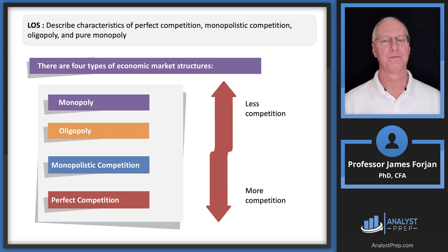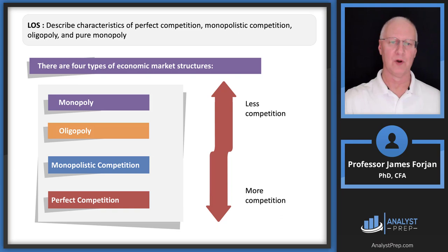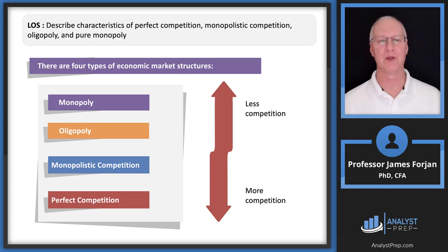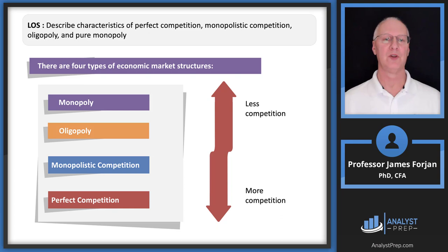In its simplest form, when you go from lots and lots of competition under perfect competition to fewer and fewer producers, you have less competition. A pure monopoly would be just one firm — one powerful firm that can pretty much do whatever it wants to do, which depends on its cost structure.